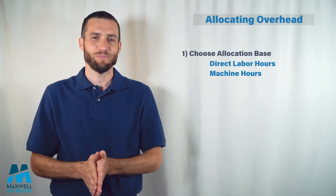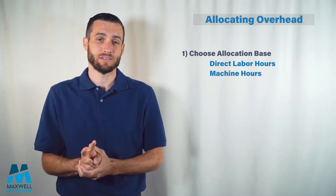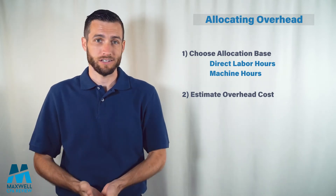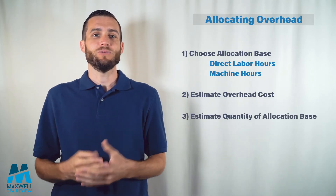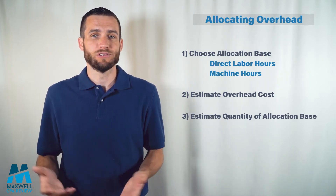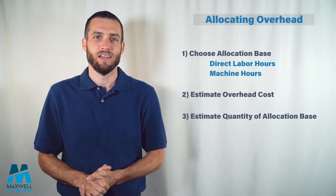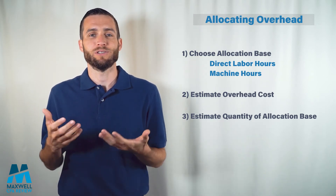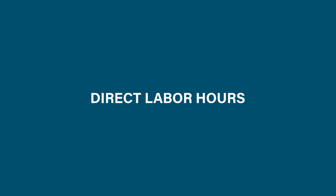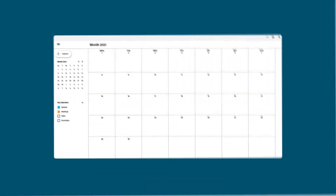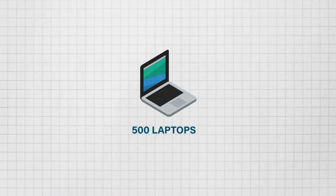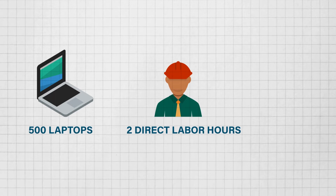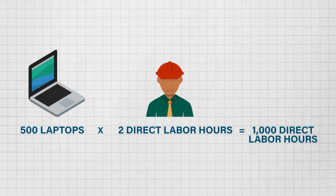Now that we have our allocation base, we need to make two estimates. One, we need to estimate what our electricity bill is going to actually cost us. Two, we need to estimate how many direct labor hours we expect to use for the period. Let's say that last month's electricity bill was $10,000, so we estimate this month's bill to be $10,000 as well. To estimate direct labor hours, let's assume we will make 500 laptops and each laptop will require two direct labor hours, giving us an estimated total of 1,000 direct labor hours.